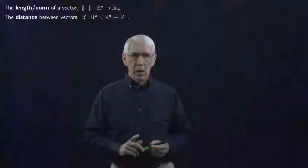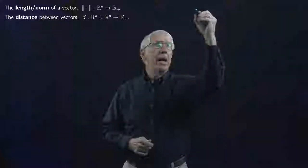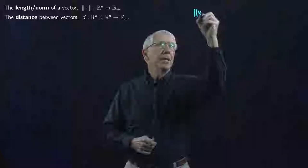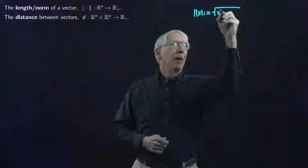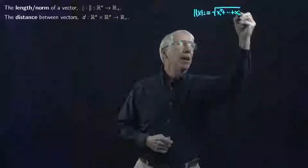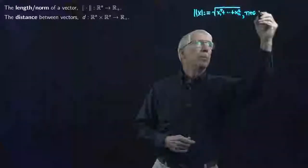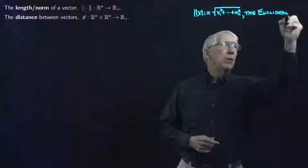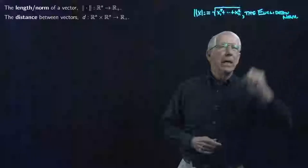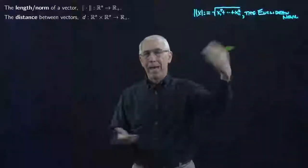Let's start by recalling what we did in one of our earliest lectures, where we defined the norm of a vector. We defined it to be the square root of the sum of the squares of the components of the vector. You'll recall I went out of my way to call this the Euclidean norm, because there are other norms that we use — and that's what we're going to see today.